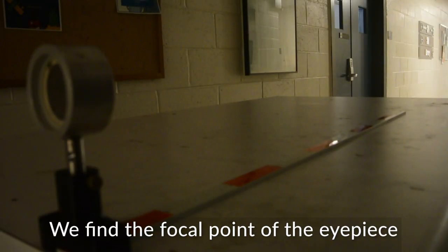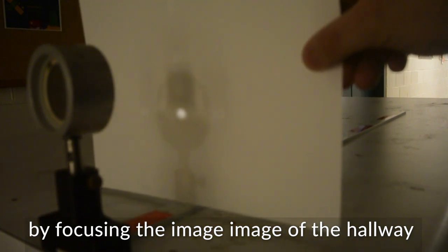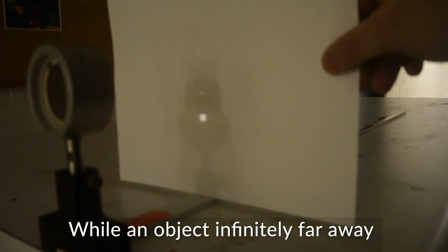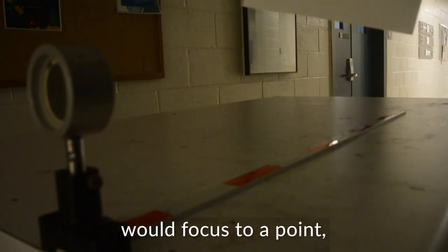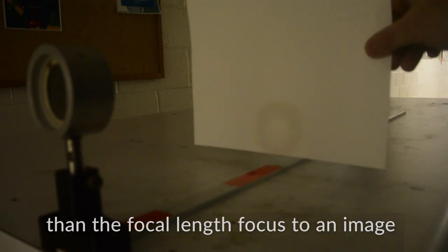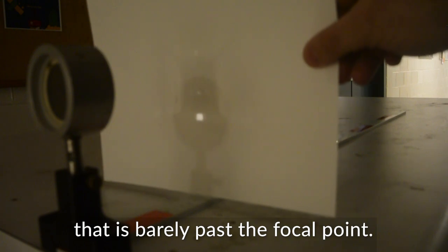We find the focal point of the eyepiece by focusing the image of the hallway on a sheet of paper. While objects infinitely far away would focus to a point, objects that are only much further away than the focal length focus to an image that is barely past the focal point.